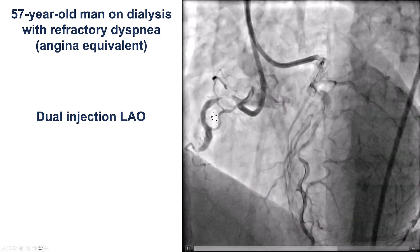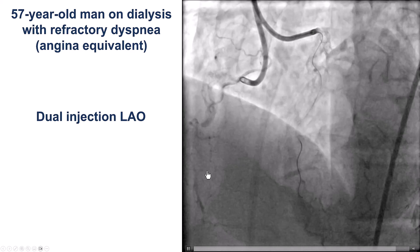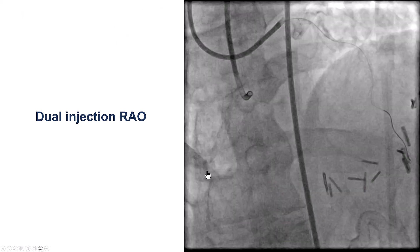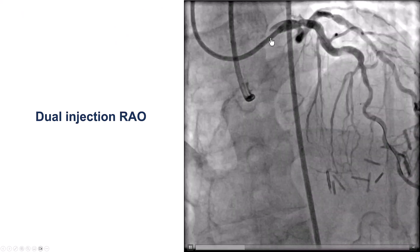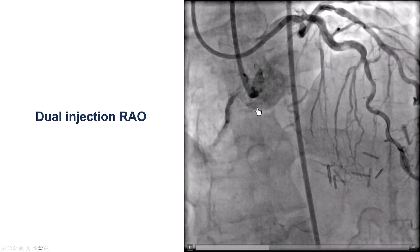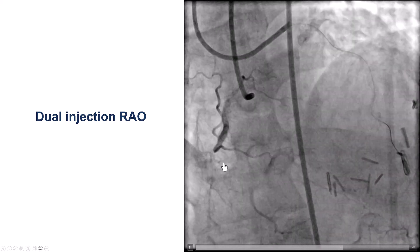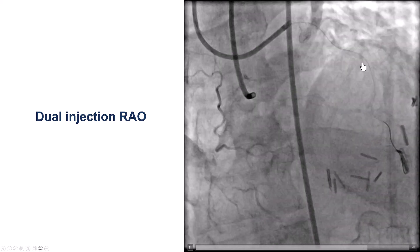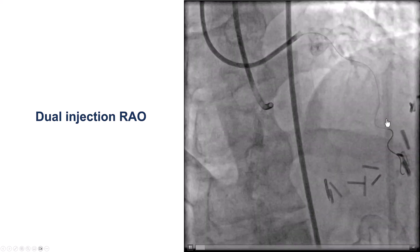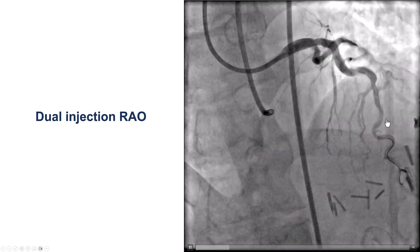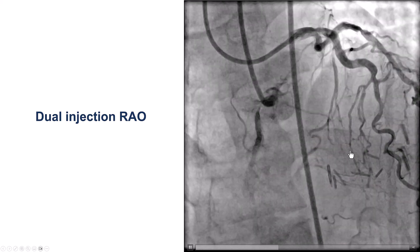The right coronary artery was heavily calcified and occluded on the middle segment. This is the dual injection. There is a CTO with clear proximal cap, short length. There are some septal collaterals filling the right coronary artery from the LAD.